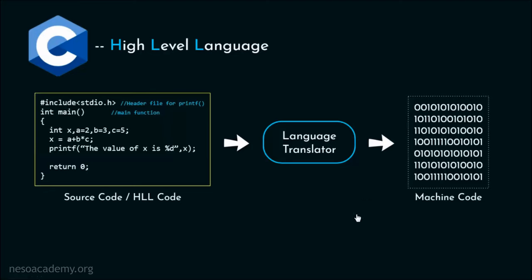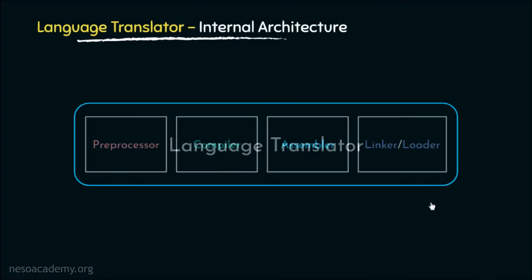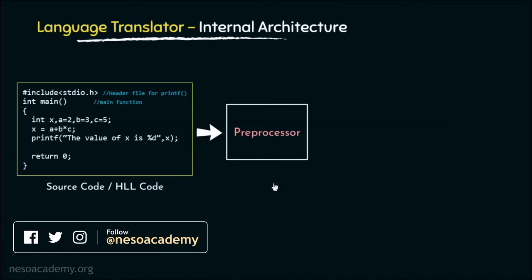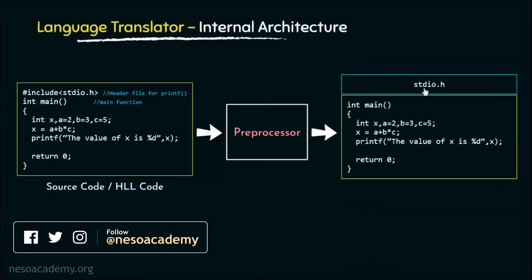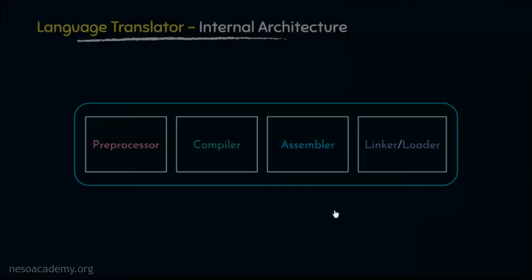Now let me walk you through the internal architecture of the language translator. Specifically for C language, the language translator has four different phases. The first one is the preprocessor. This preprocessor will resolve all the preprocessor directives. For this particular code, reading the hash include preprocessor directive, it will append the standard input-output header file to the high-level language code, removing the preprocessor directive. Also, it will remove all the comments. So now the high-level language becomes a pure high-level language.